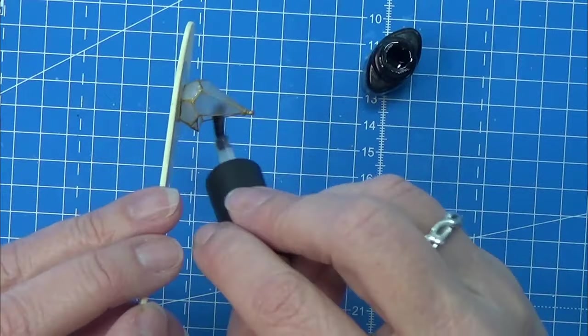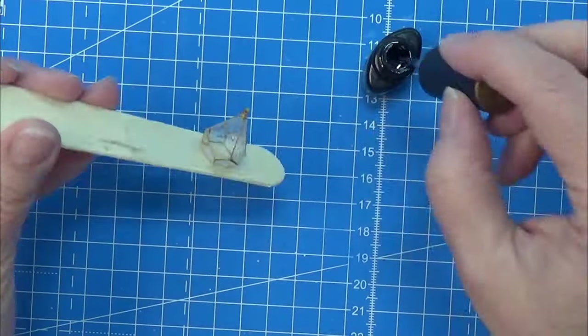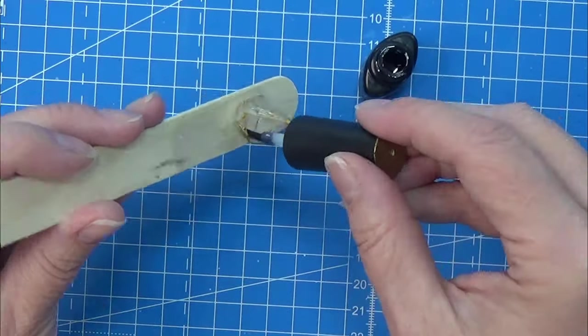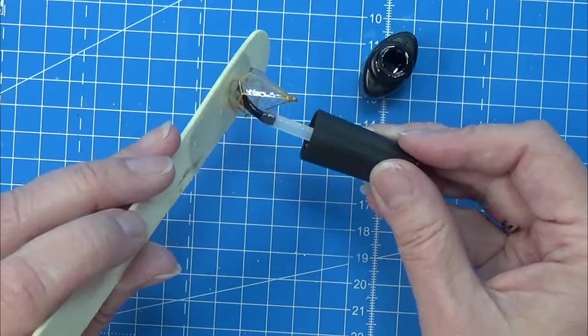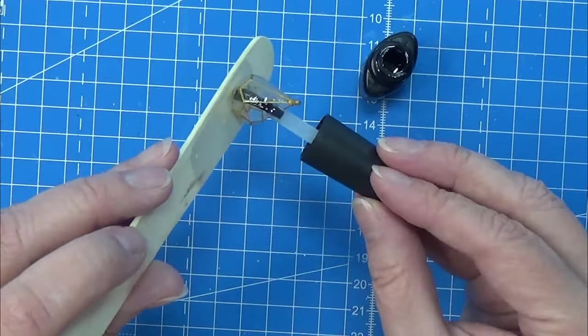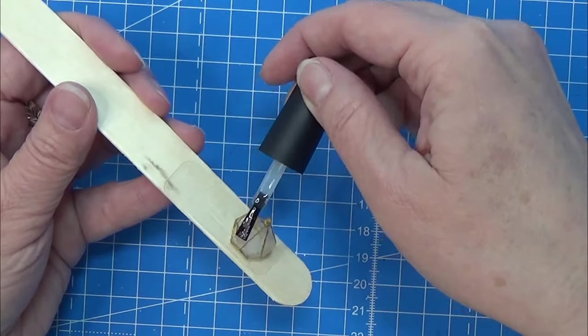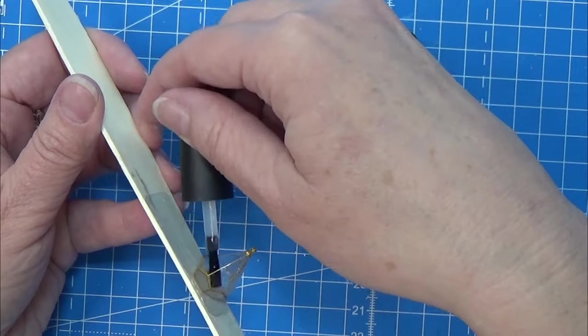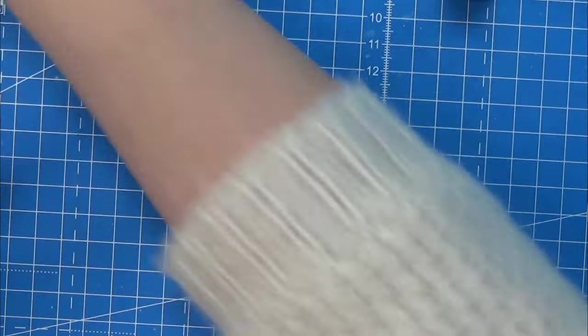Then I'm using a UV resin topcoat that is a non-wipe topcoat, and remember it's UV resin so you need a UV light for this one. I just place this on a piece of tape on a stick and I'm painting every nook and cranny I can get to with this topcoat before I put it under my UV light.